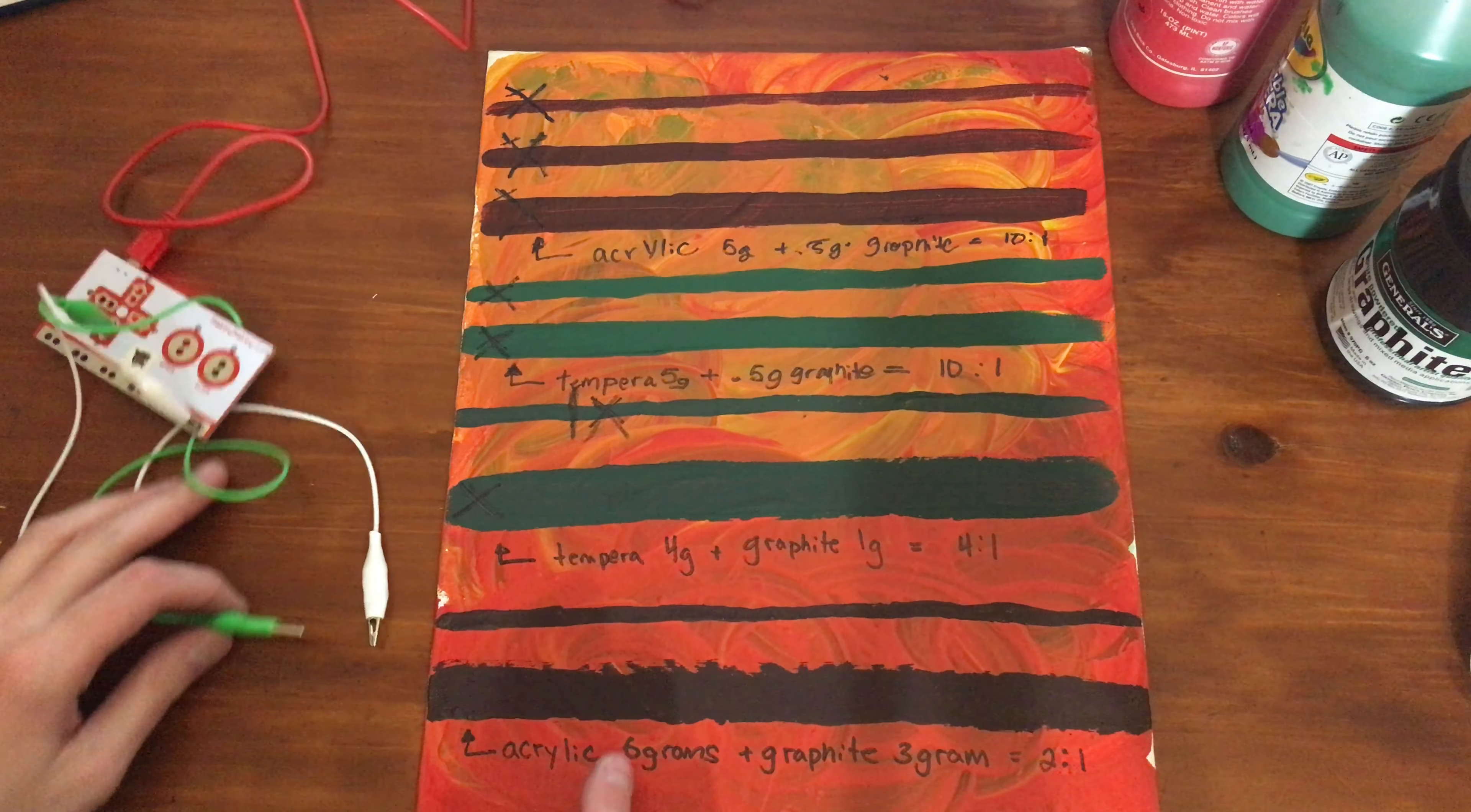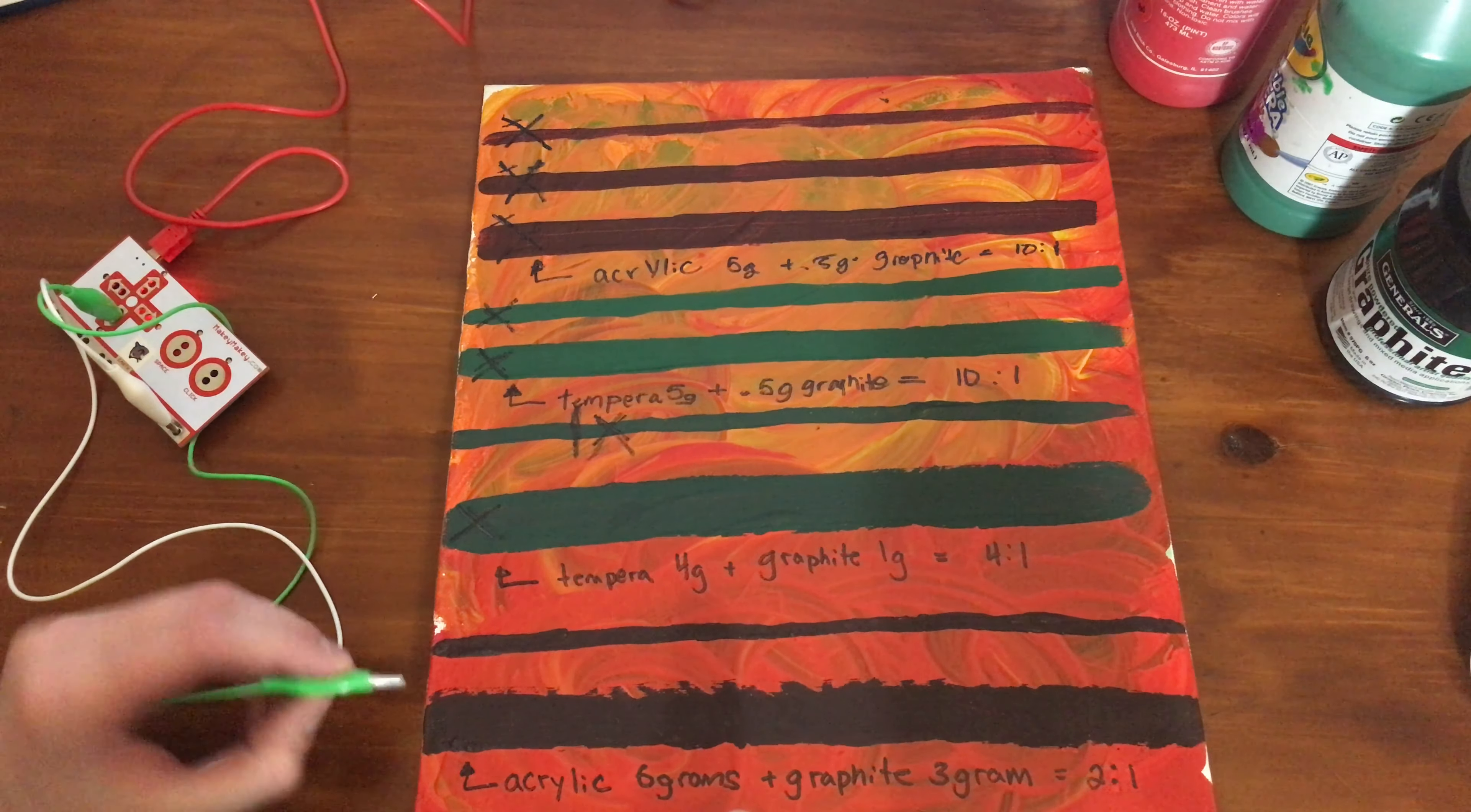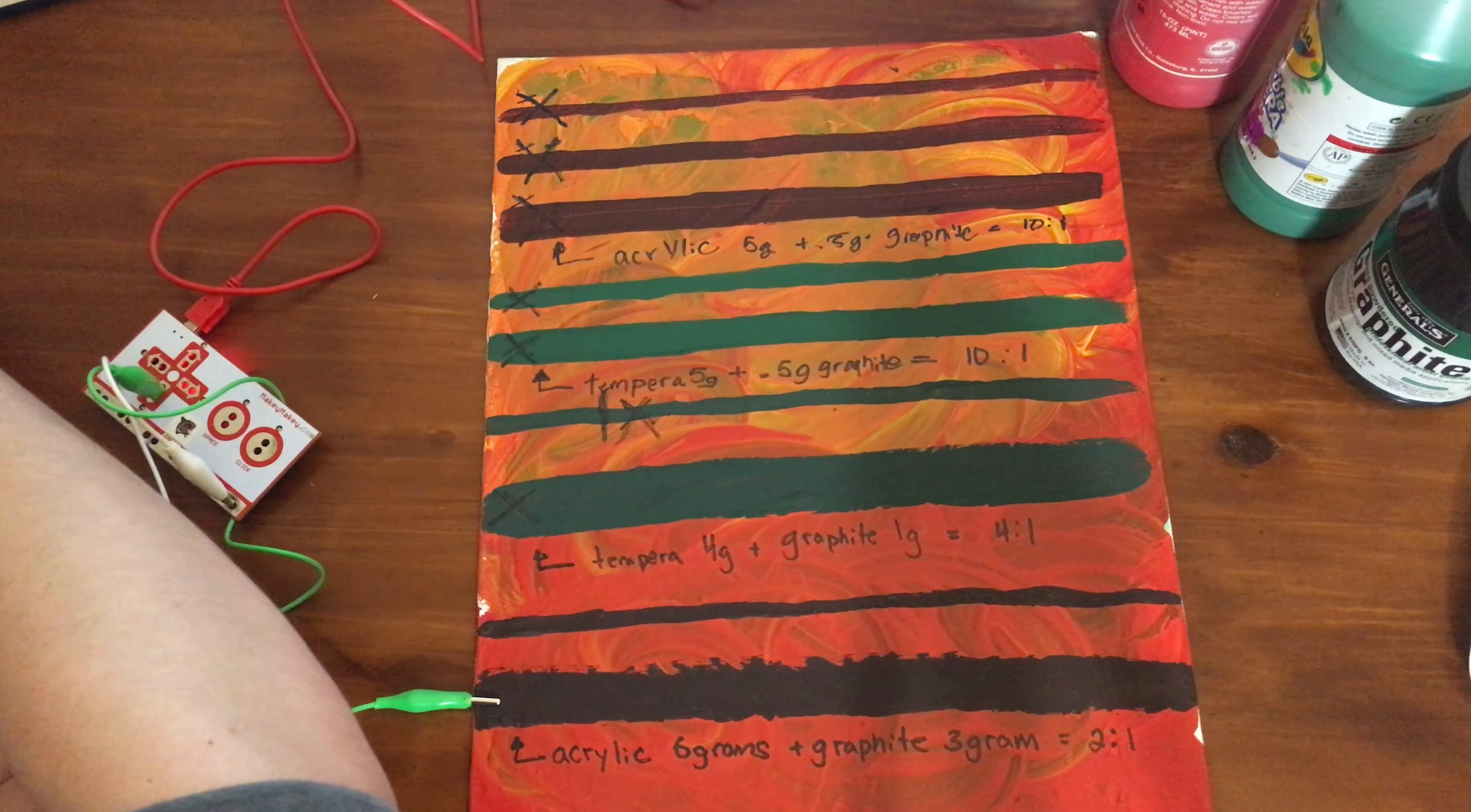So I first tried two to one using acrylic, and when I do that, you can see that it goes from red to pretty dark black. This is the input and this is the ground, so when I do that, let's turn it up.